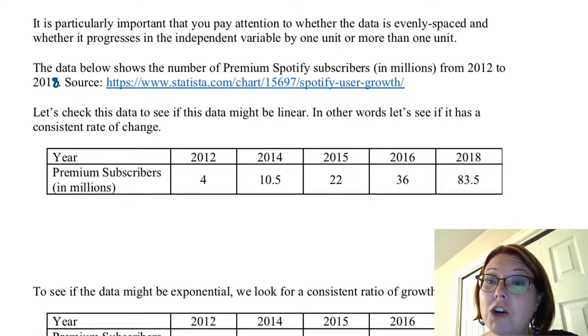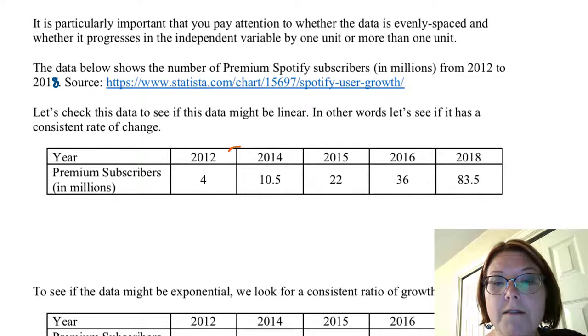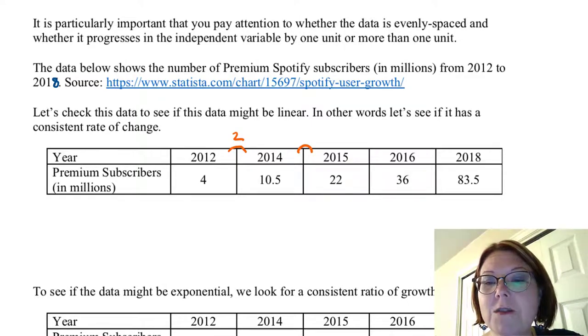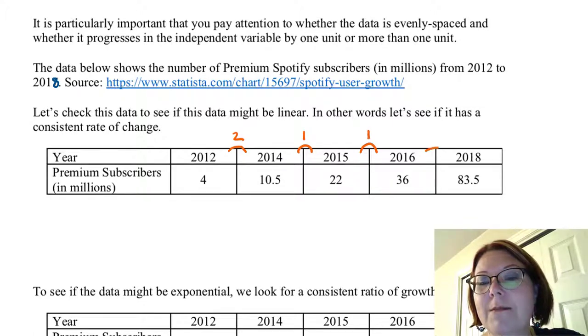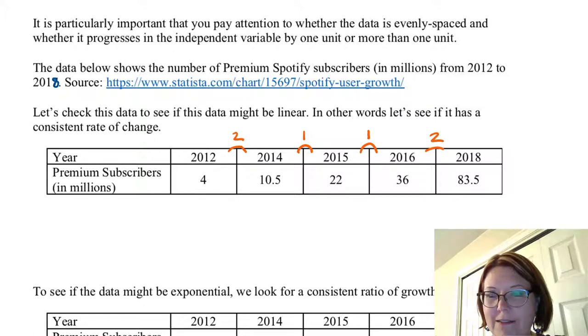I'm just going to make a note to myself of what the spacing is using a little arc above the years. So the difference between 2012 and 2014 is two years. Between 2014 and 2015 is one year. Between 2015 and 2016 is one year. And between 2016 and 2018 is two years. So not evenly spaced data.